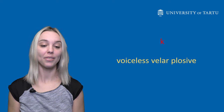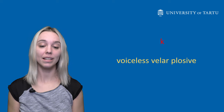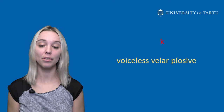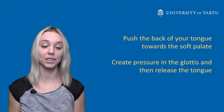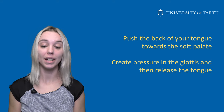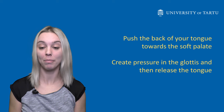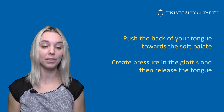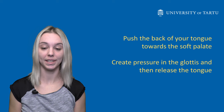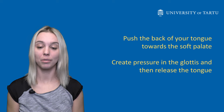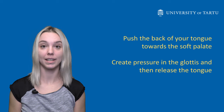K is a voiceless velar plosive. You articulate this sound by pushing the back of your tongue towards the soft palate, also known as the velar region of your mouth. To pronounce this sound, you create pressure in the glottis. Your vocal cords do not vibrate while producing k.